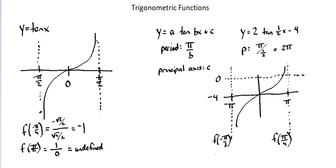The function of negative pi over 3 is 2 times tangent of 1 half times negative pi over 3 minus 4. My resulting output in the calculator is approximately negative 5.155.